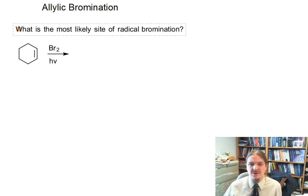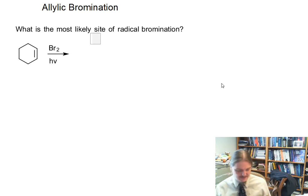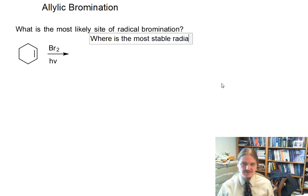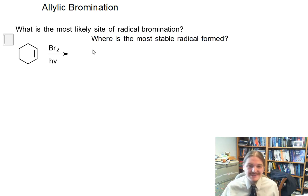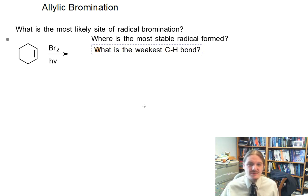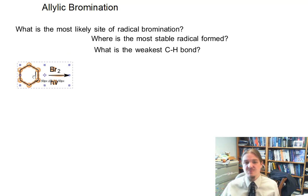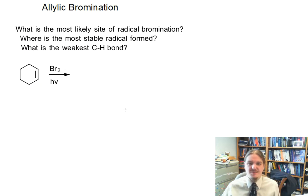We're going to start by asking a question: what is the most likely site of radical bromination on cyclohexene? That question is exactly the same as asking where is the most stable radical form, which is exactly the same as asking which C-H bond on the structure is the weakest C-H bond. If you can answer any of these questions, you can answer all of them, because bromination happens at the place where the most stable radicals form, which is where the weakest C-H bond is.